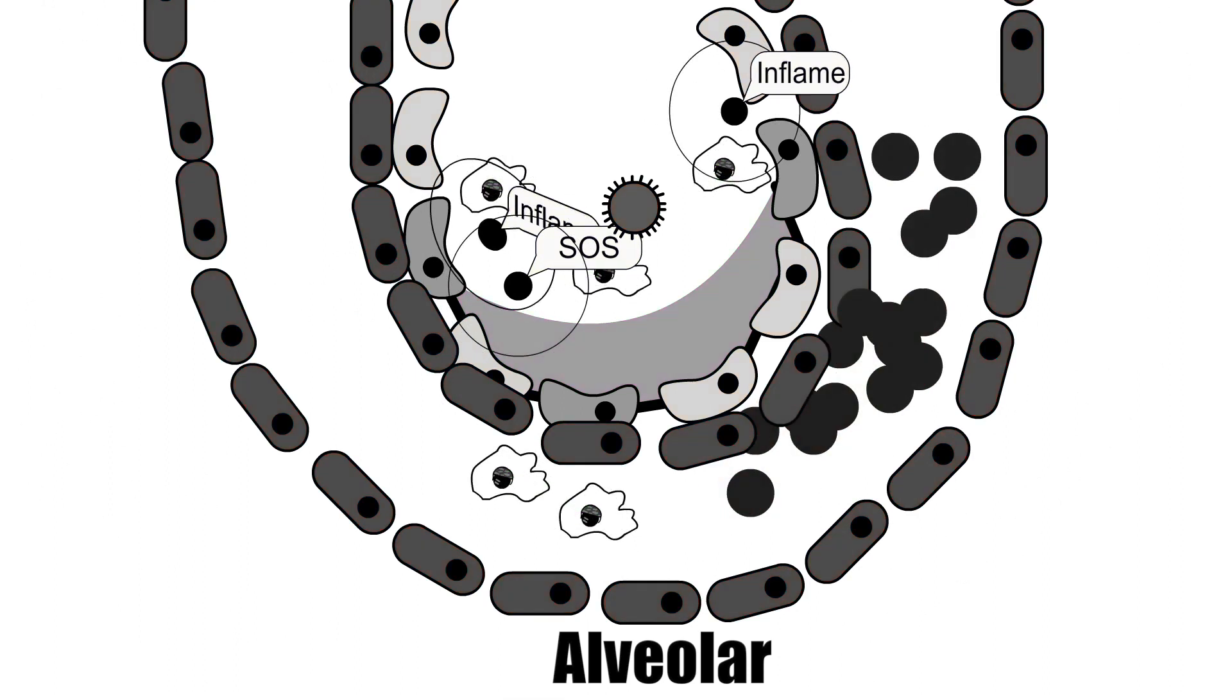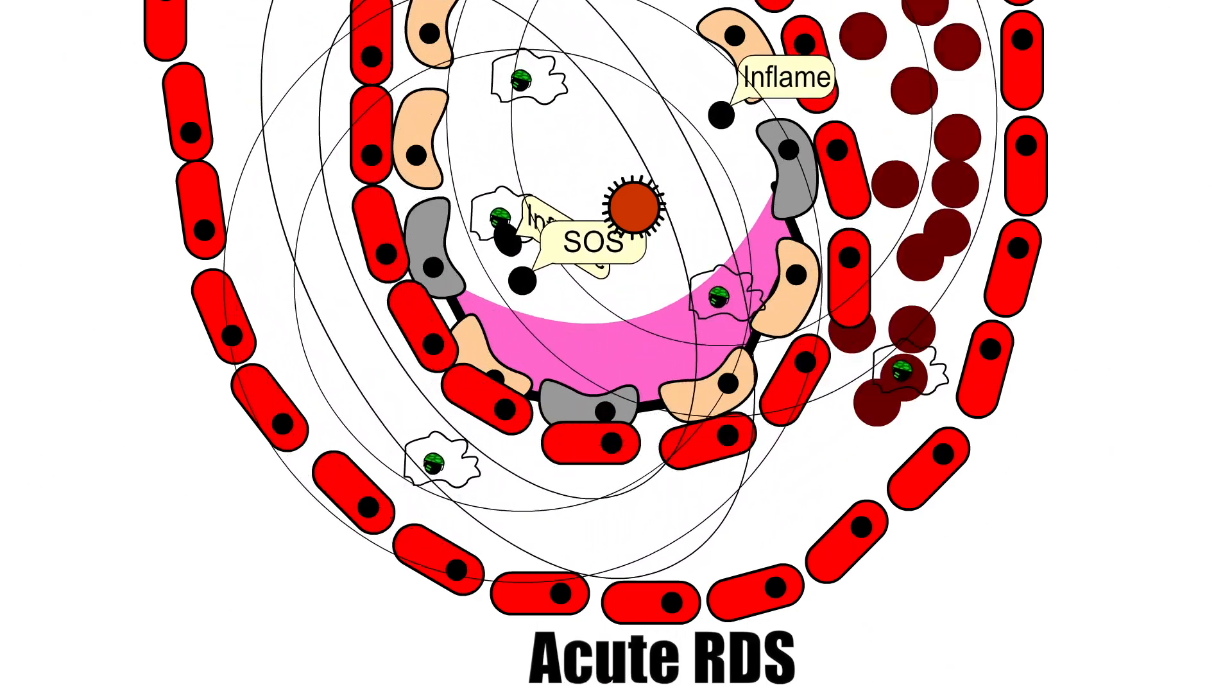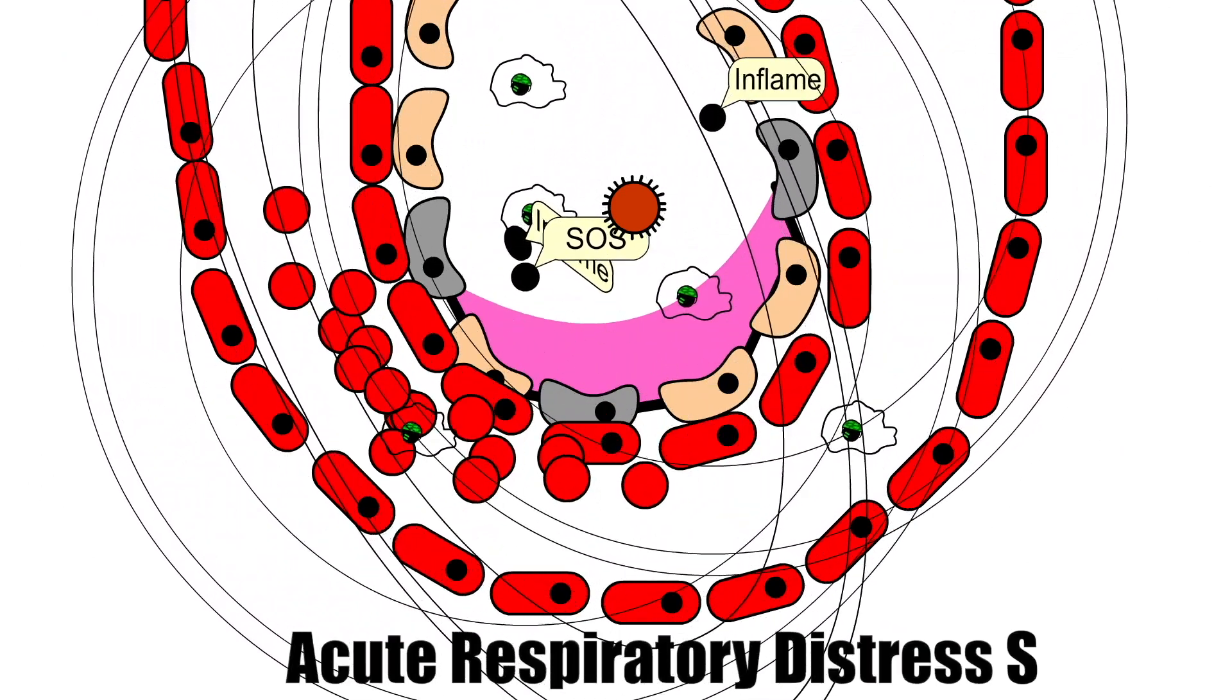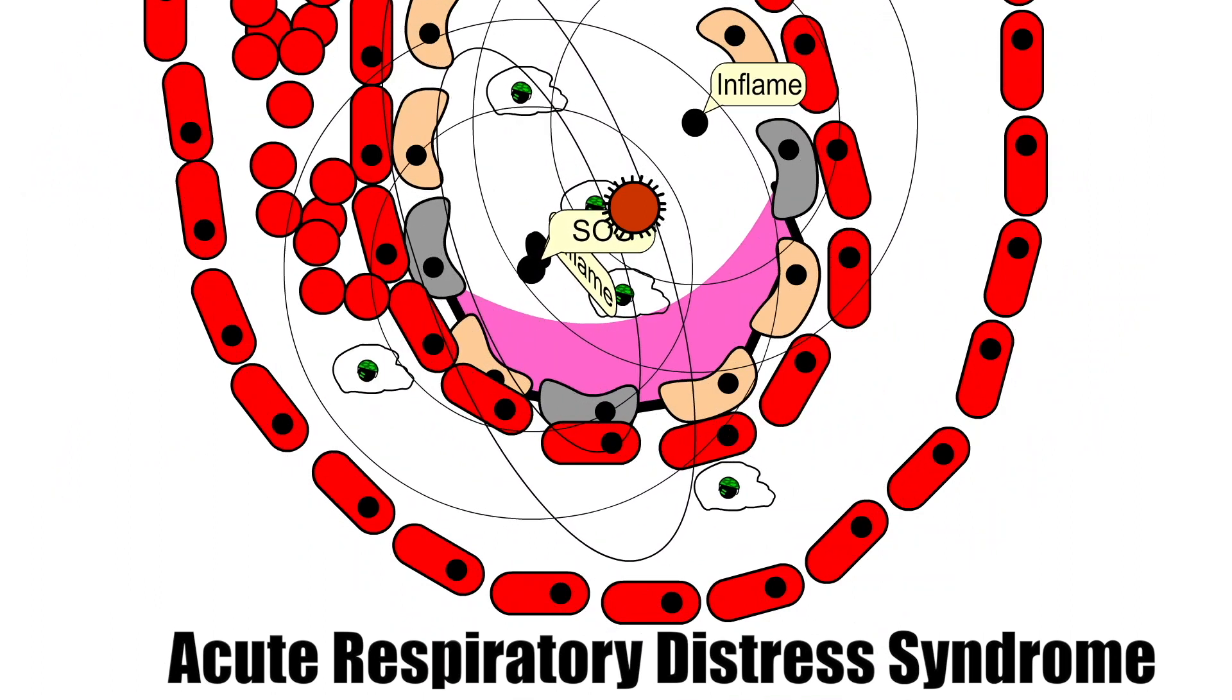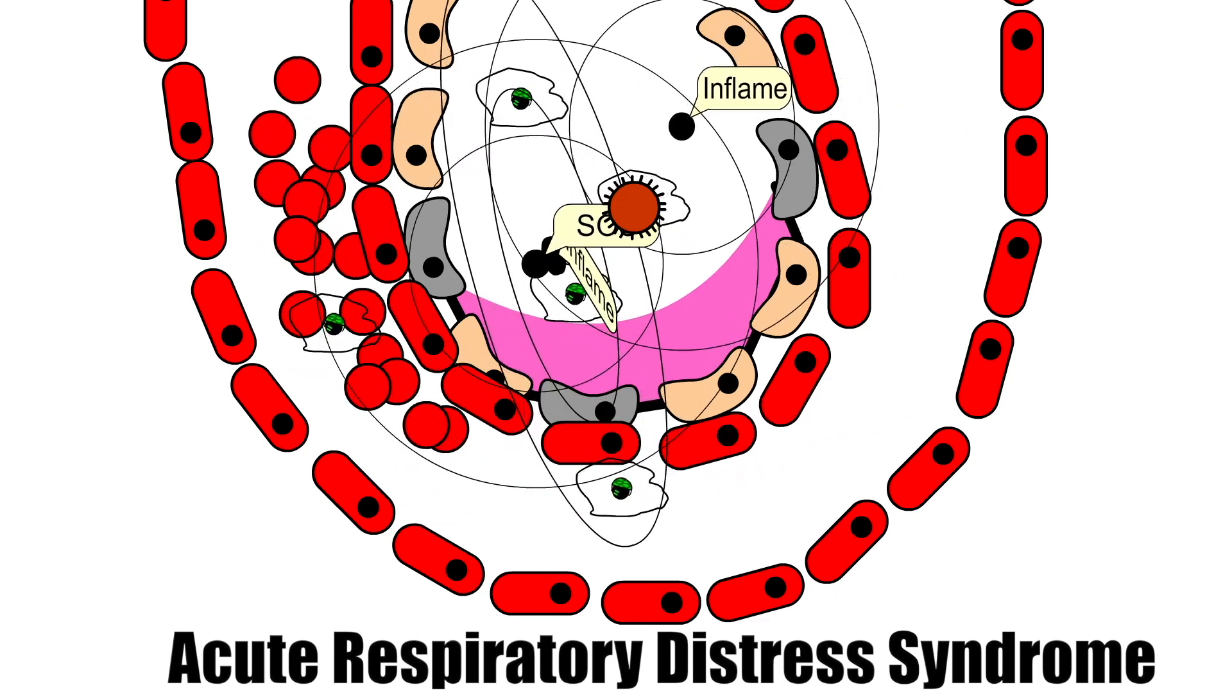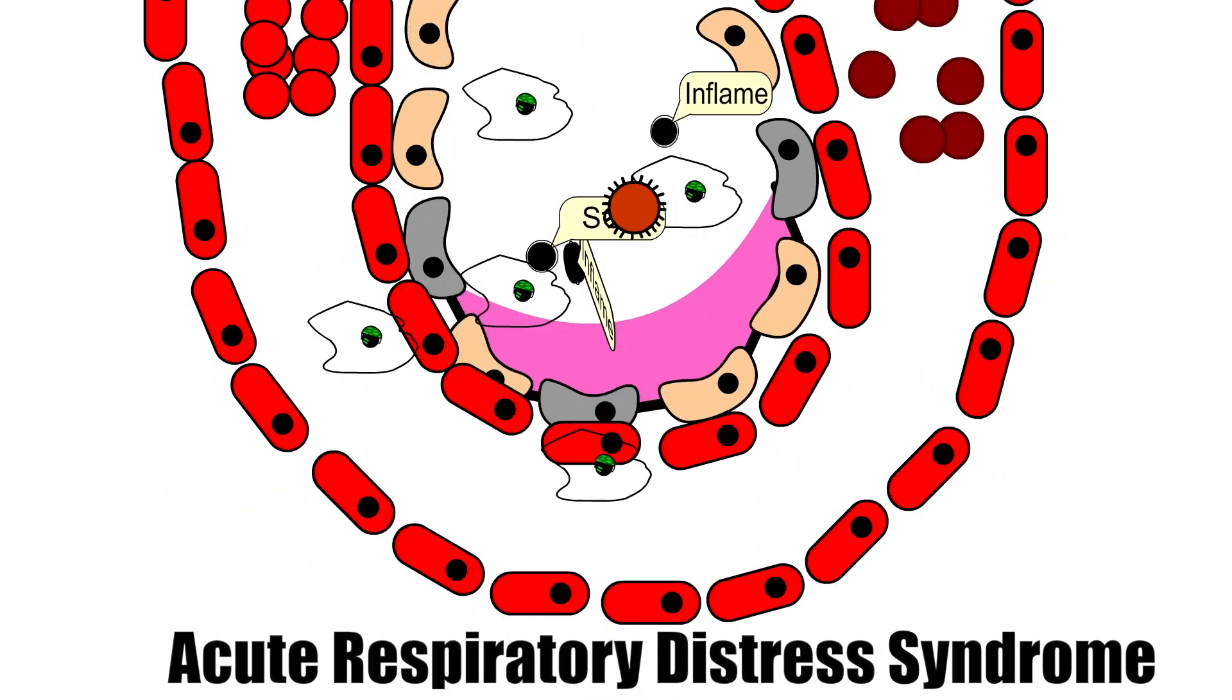The damage to the lungs and inflammation can also cause what's called ARDS or acute respiratory distress syndrome, which is a collection of symptoms such as shortness of breath, rapid breathing, or bluish skin, the damage from which can sometimes affect you for life.